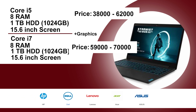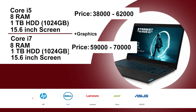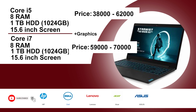Now we can go to the i7. We can use all videos for editing. We can use all video editing software and animation software. This is a Core i7 system with 8GB RAM or 16GB RAM and a 1TB hard disk. If you are using video editing, you need the extra storage space. This is a brand new laptop.